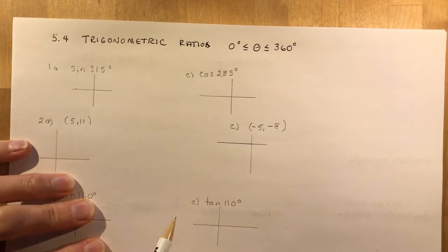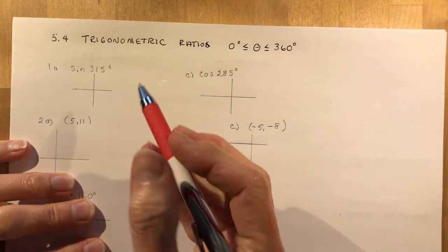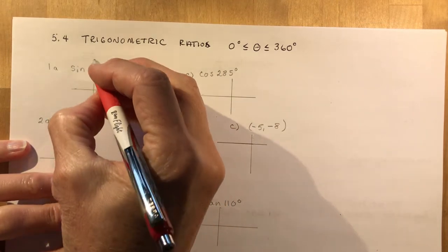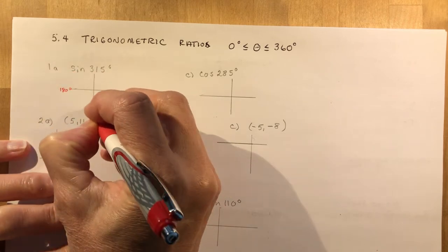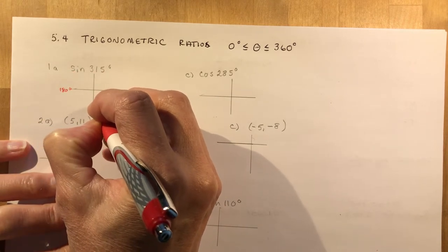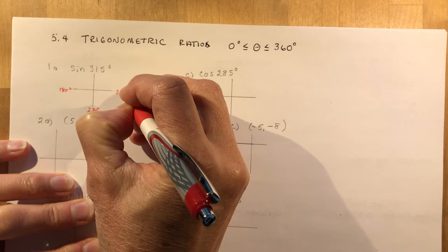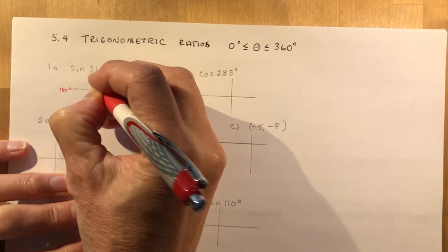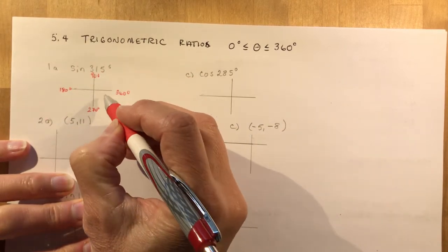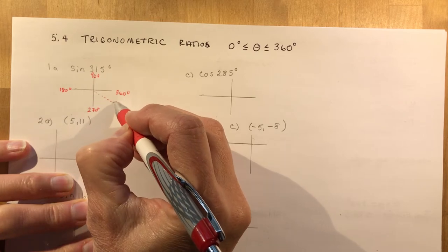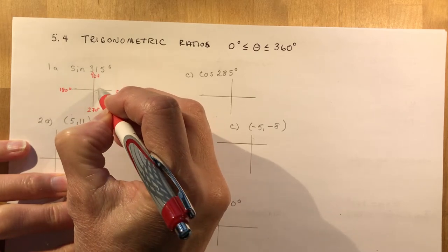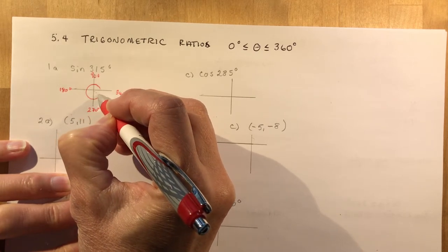The first thing you want to do is make a sketch. It says 315 degrees — you have to figure out what quadrant you're in. You should know that this is 180 degrees here, 270 degrees here, 360 degrees here, and 90 degrees here. So if I'm at 315, I'm over here — that's my terminal arm. We swing it around like this.